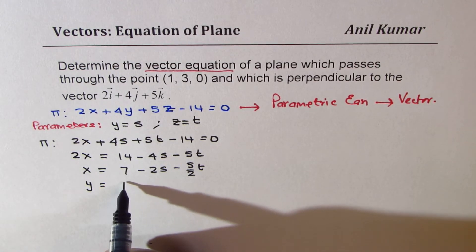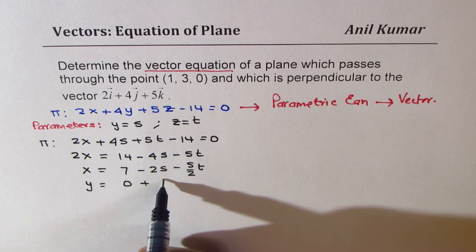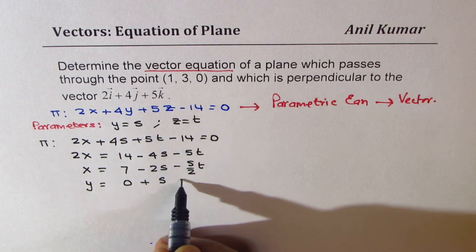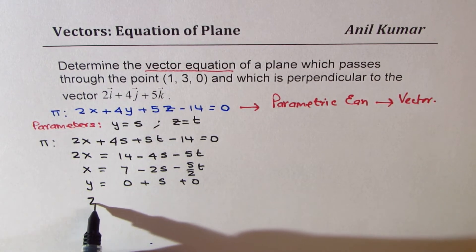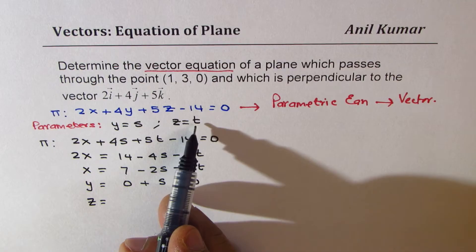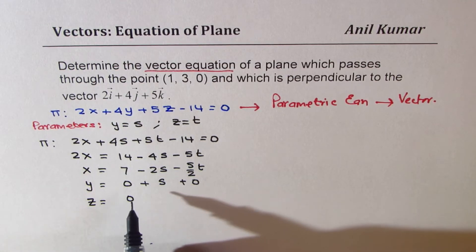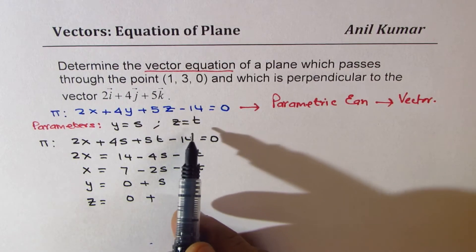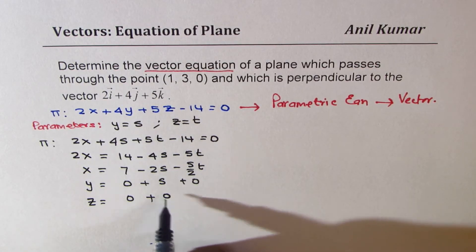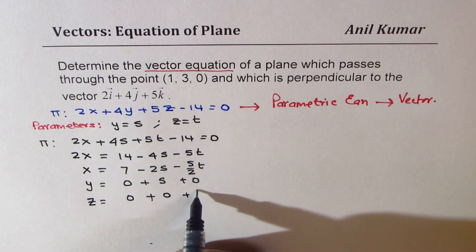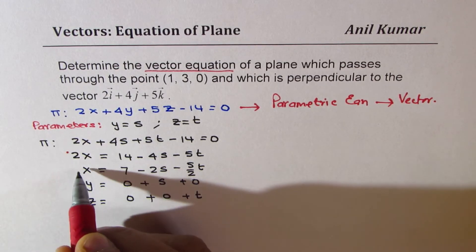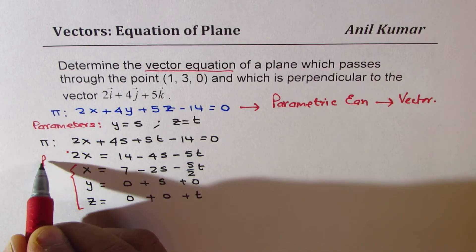So the parametric equations are: x equals 7 minus 2s minus (5/2)t, y equals 0 plus s, and z equals 0 plus t. That gives us the full parametric equation for x, y, and z in terms of parameters s and t.